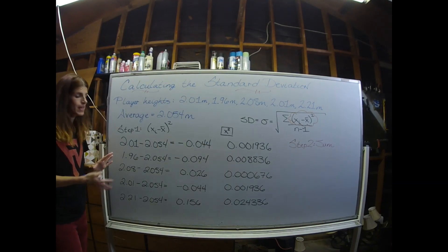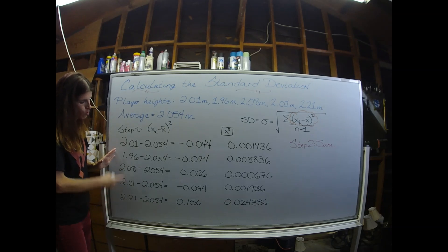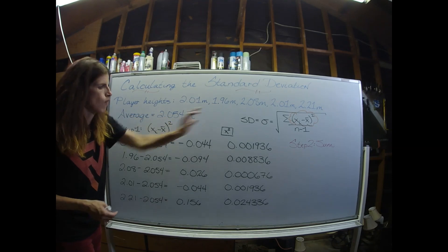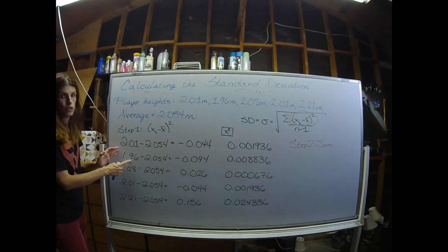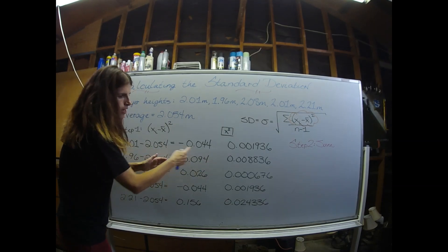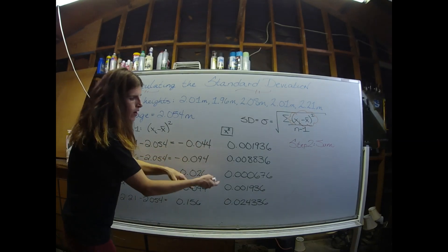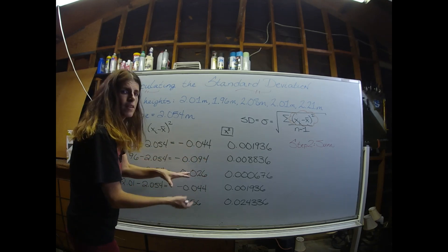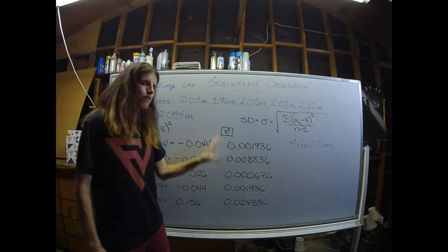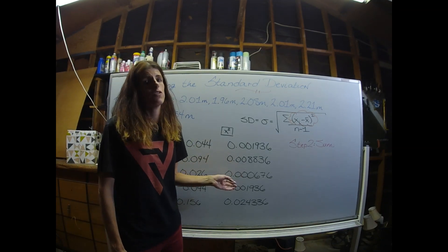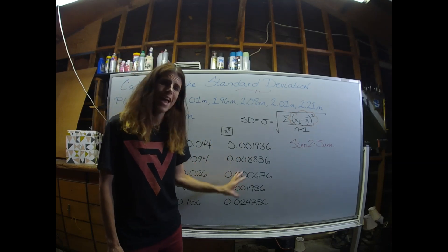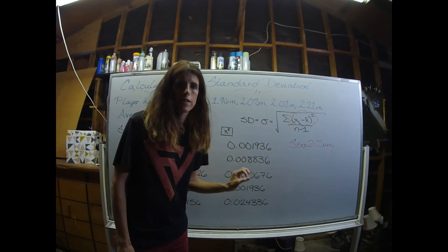So I repeated the calculation four more times. I systematically went through and grabbed each individual value and subtracted the average. Kept this number displayed in my calculator, and then I squared it. Squaring that value gets rid of the negative signs. If after squaring you have any negative signs remaining, then you want to go back and check your math. There should be no negative signs before you move on to step two.